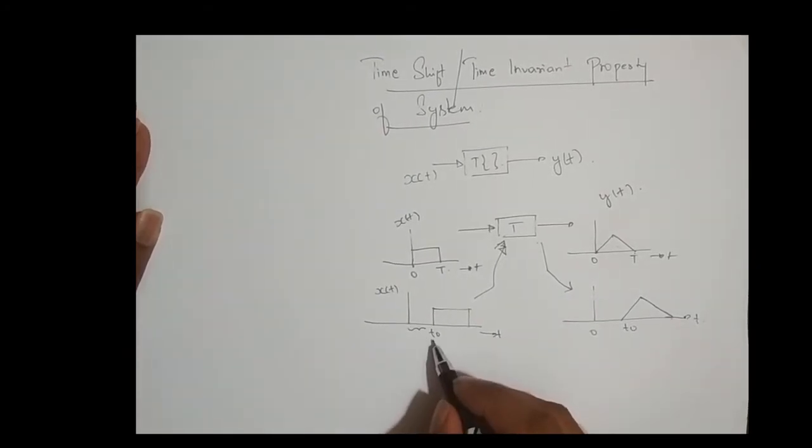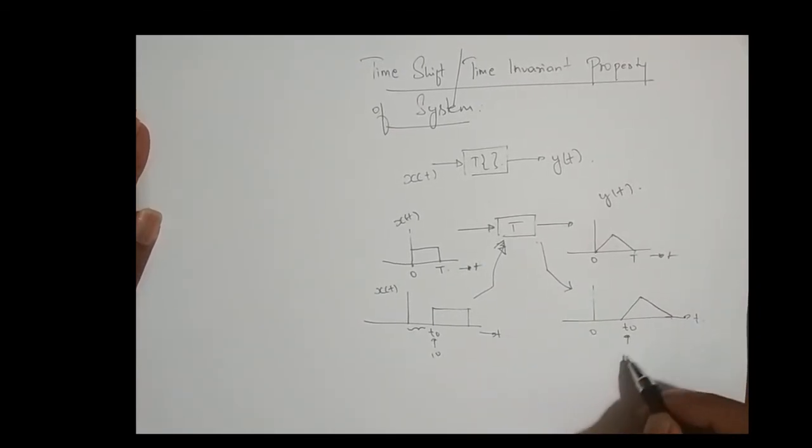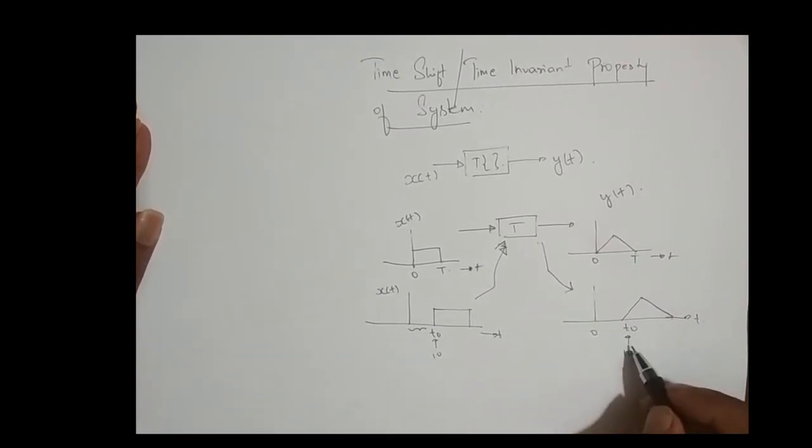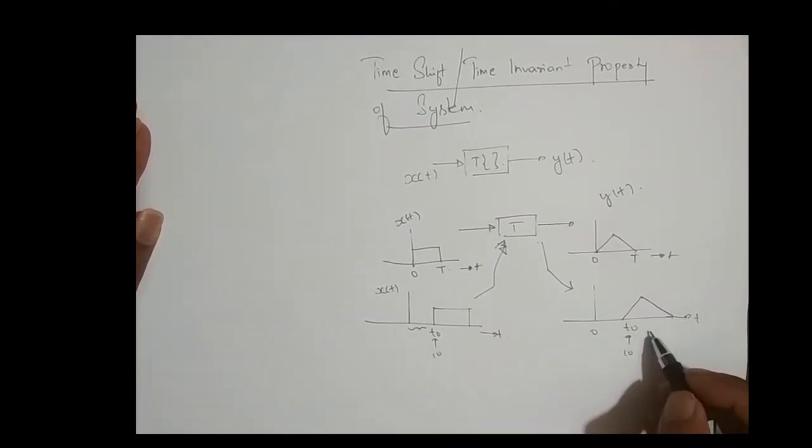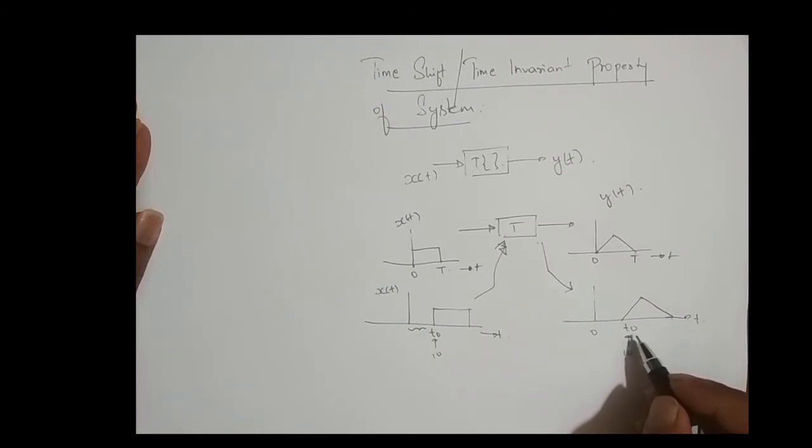For example, if t_0 is 10, here also the output should be shifted right 10 times. If I shifted the input signal 10 times and the output signal is shifted several times - I mean, other than 10 times - then the system is time varying.